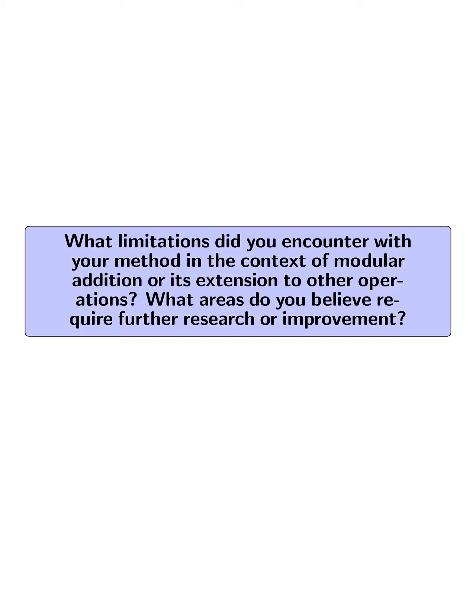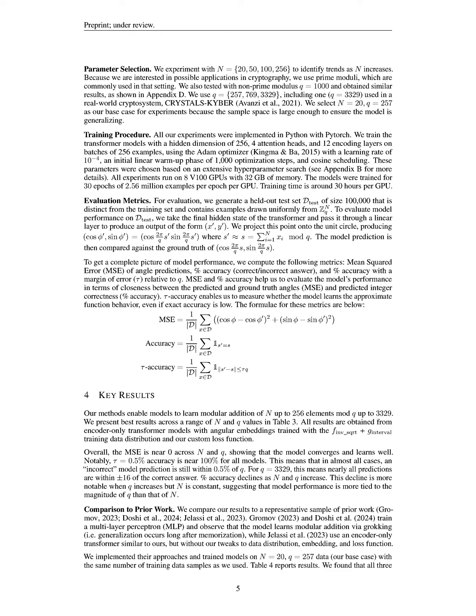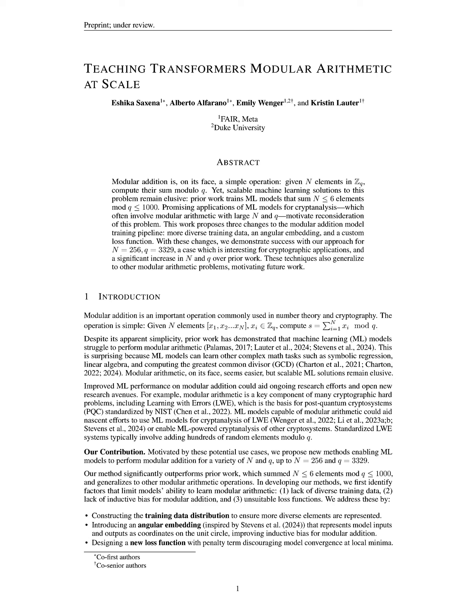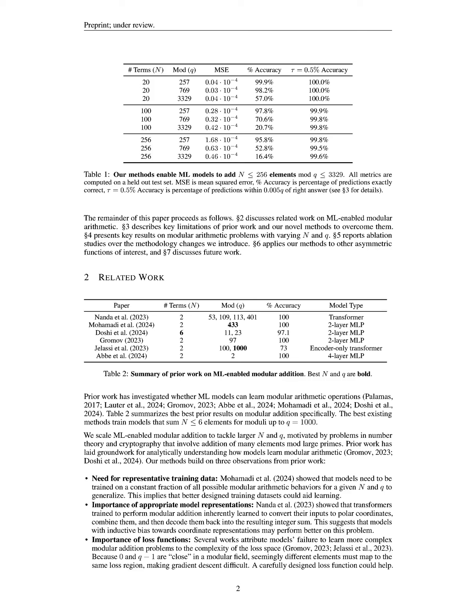What limitations did you encounter with your method in the context of modular addition or its extension to other operations? What areas do you believe require further research or improvement? In our work on modular addition, we encountered limitations primarily related to the model's performance as the values of n and q increased, particularly noting that percent accuracy declined with larger q values while n remained constant. This suggests that the model's ability to generalize is more sensitive to the magnitude of q than to n.